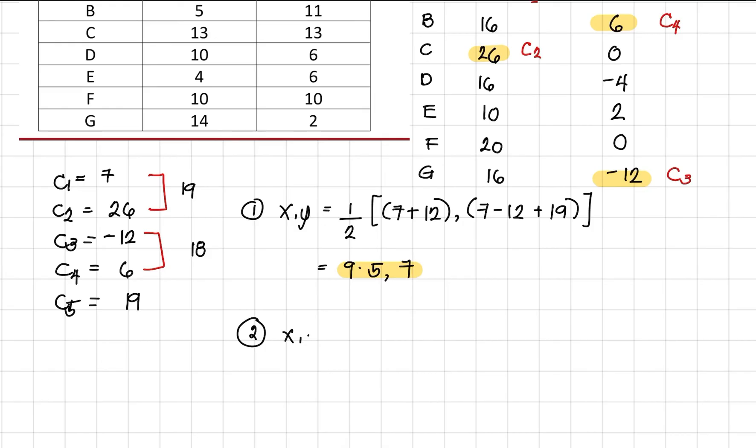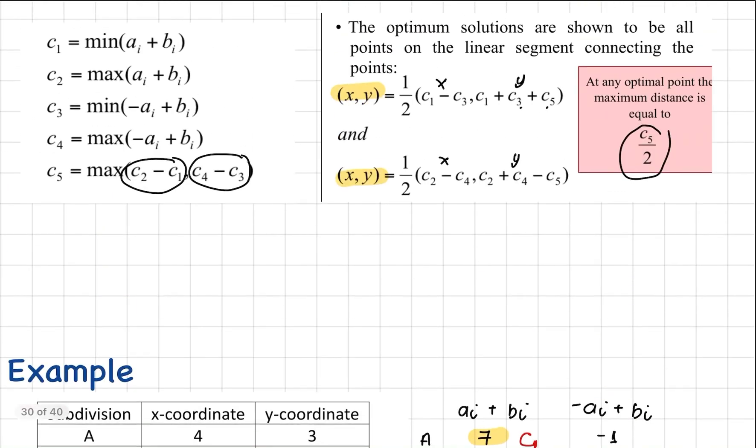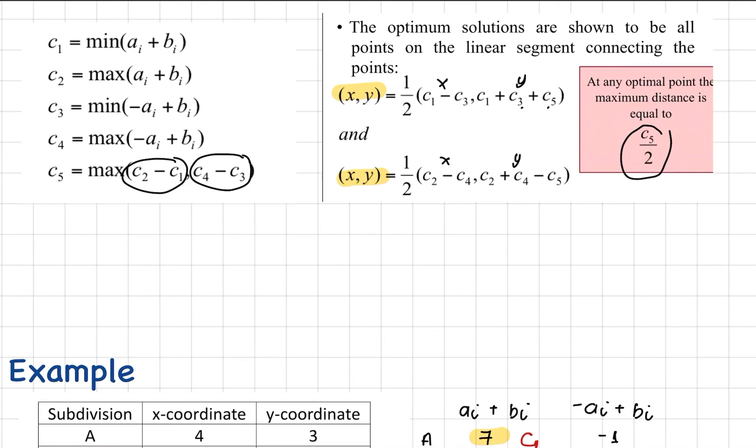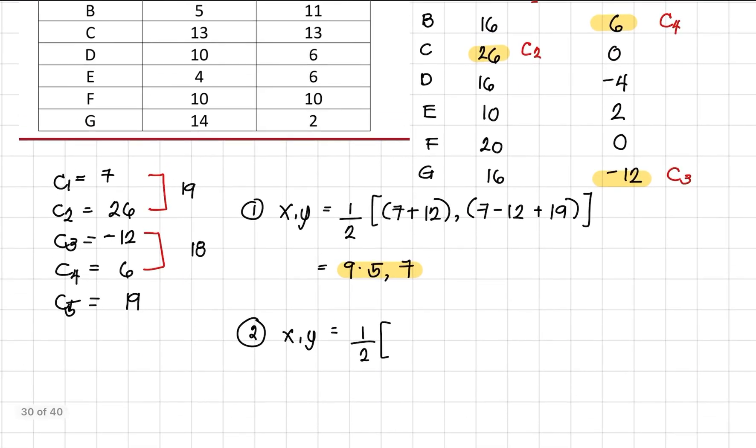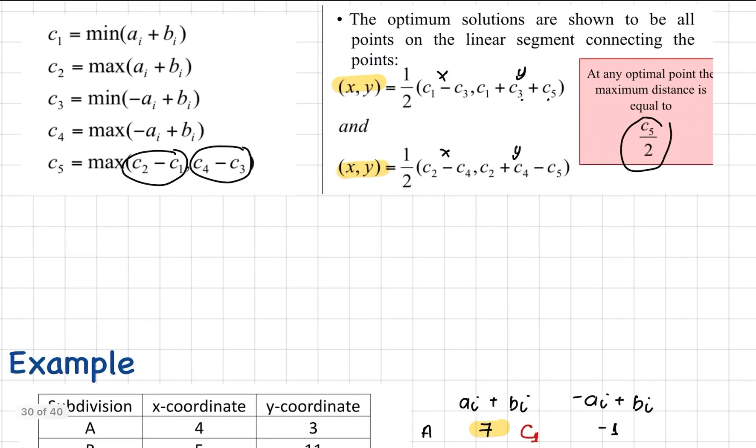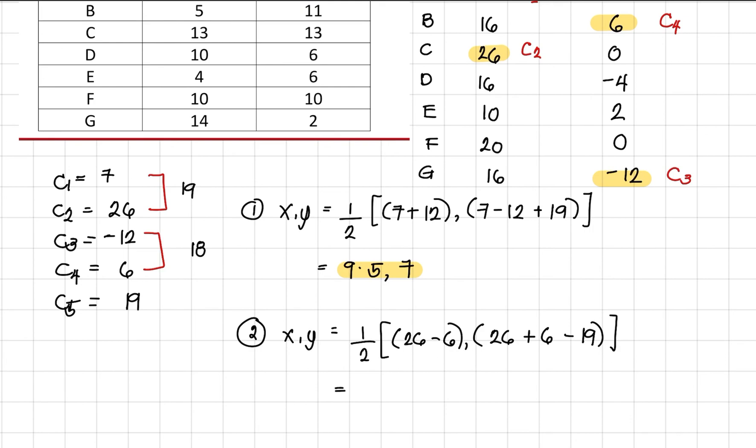The second point is X and Y again, 1 half. The formula is C2 minus C4 and then C2 plus C4 minus C5. Our C2 is 26 minus C4 which is 6, and the Y coordinate is 26 plus 6 minus 19. For the X coordinate, that's 1 half of 26 minus 6, so that is 10. And then the Y coordinate is 1 half of 26 plus 6 minus 19, and the answer is 6.5.